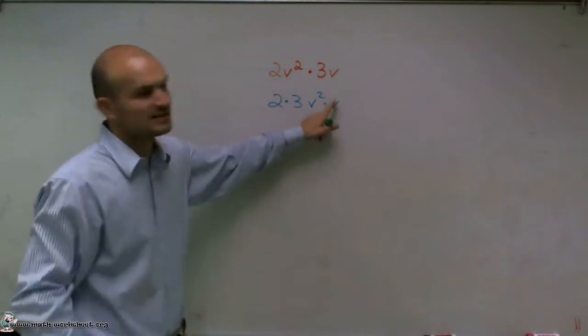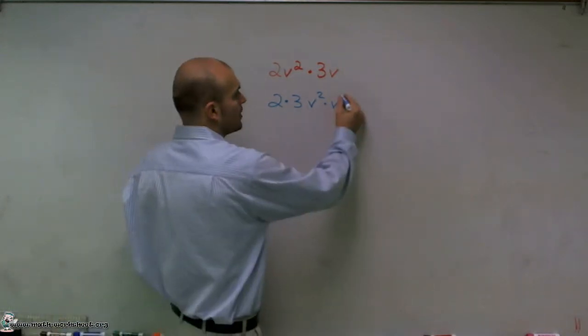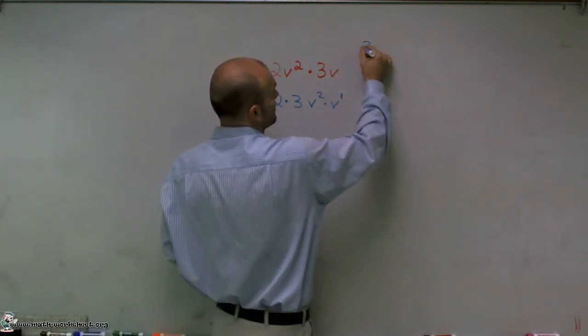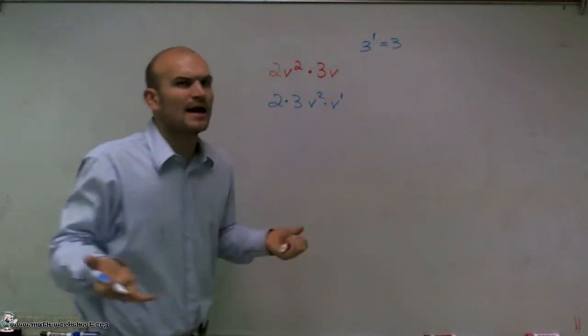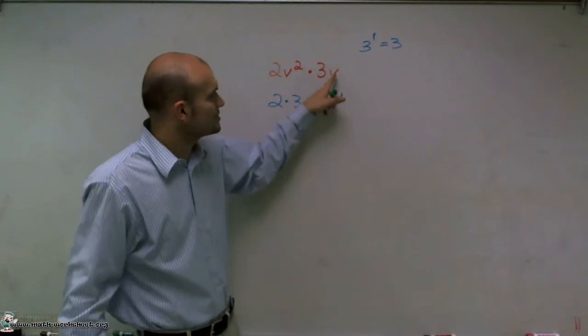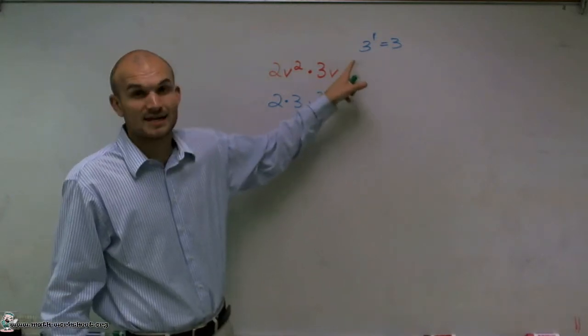Now, if v does not show an exponent, we know we can always put an exponent of 1 up there. Because if you think about it, 3 raised to the first power equals 3. But obviously, for simplicity purposes, we usually don't write that 1 as an exponent unless we need to.